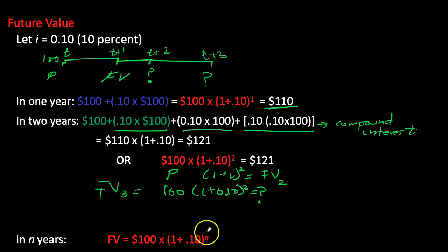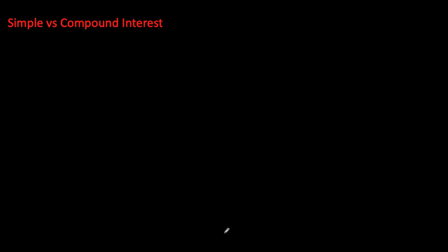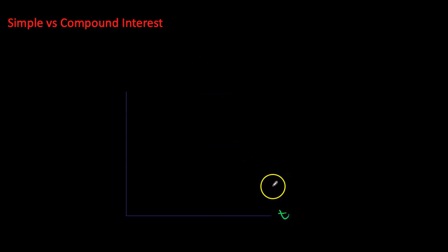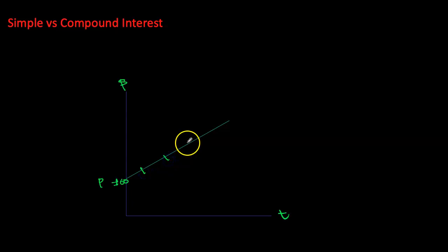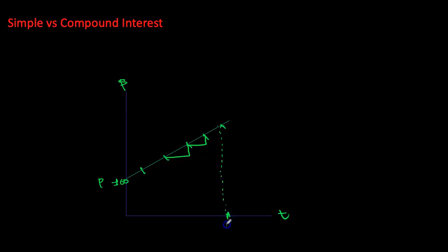Future value can be calculated for any principal amount to compare how it differs under simple versus compound interest. On a two-dimensional chart with time on the x-axis and dollar amounts on the y-axis, earning simple interest at 10% on a $100 principal produces a linear curve — you earn $10 more every year, and after n years we can see the total simple interest earned.